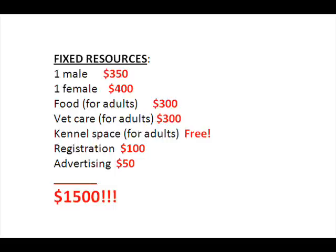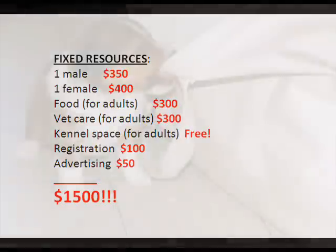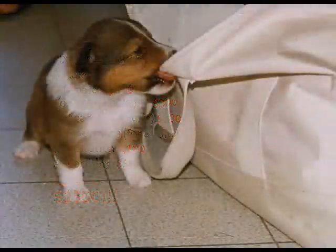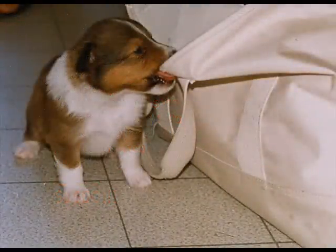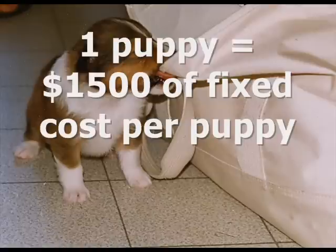Let me ask you another question. Assuming that I could perfectly control the level of output that I produce — not so realistic for puppies, I know, but it is true for most other forms of output — what happens if I produce only one puppy? That poor little puppy has to bear the entire weight of the $1,500 in overhead or fixed costs.